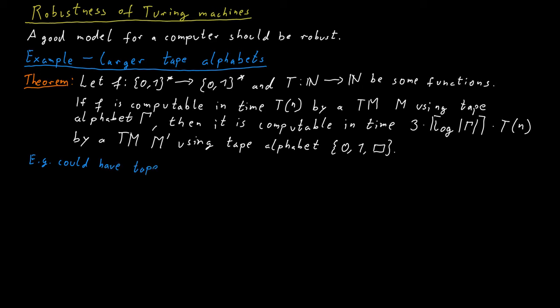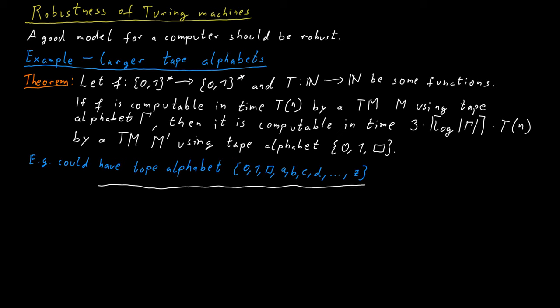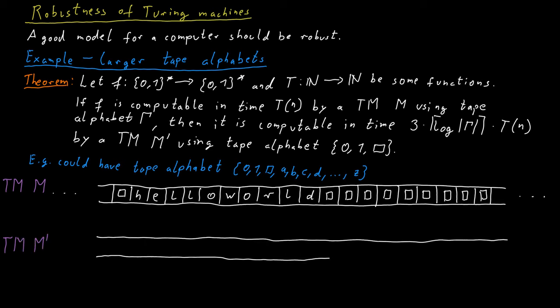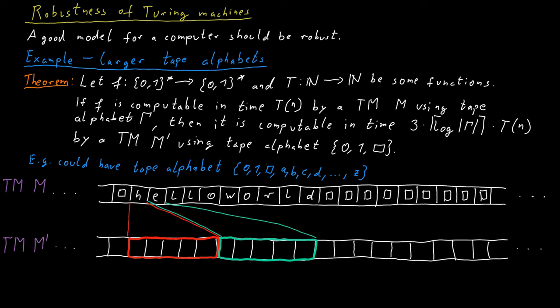For example, we might have a larger tape alphabet that doesn't just include 0, 1, and blank, but also all the letters from A to Z, and we can then write something like "hello world" on the tape. We would express this on machine M' by reserving five cells for each character on the original machine, because five bits are sufficient to encode each character of the larger tape alphabet Γ. We might encode the symbol H as 01010, taking the first block of five cells and writing 01010 into them. Then we might encode E as 00111, writing that into the next block of five cells, and so on.